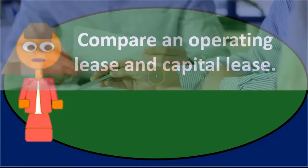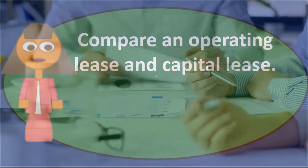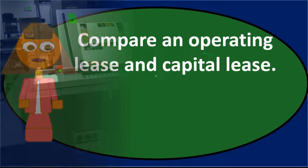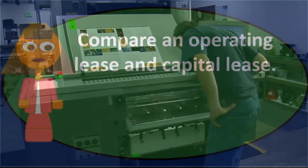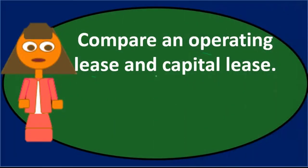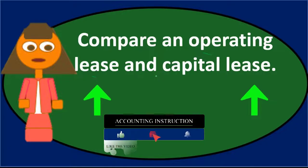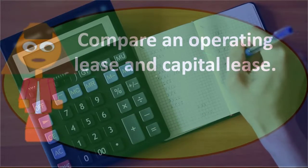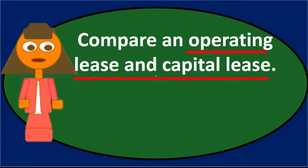Another criterion is if the lessee must hold the asset and make payments for most of the useful life of the equipment. If the lessee is using the equipment for substantially all of its useful life, that again looks like a purchase in substance. Finally, if you present-value the future cash flows and they're roughly equal to or close to the purchase price of the equipment, that looks a lot like a purchase agreement, because you're essentially paying the present value of the purchase price.